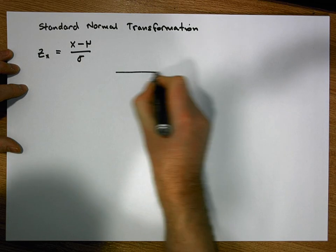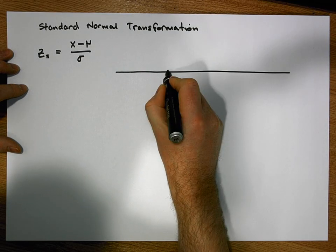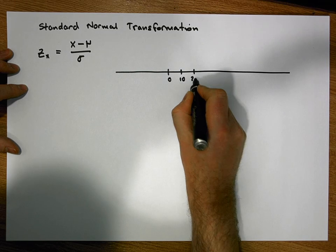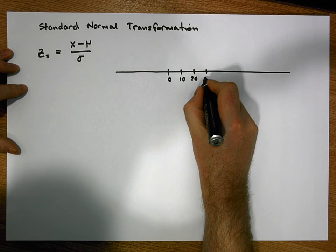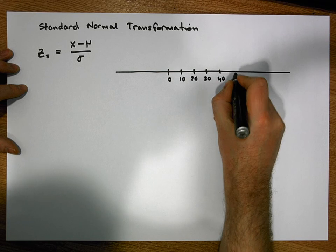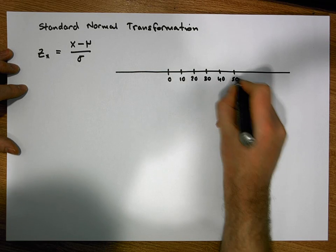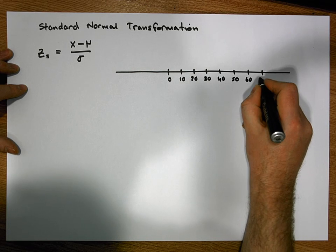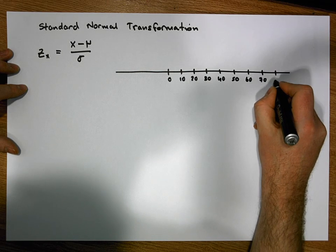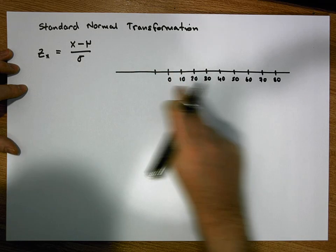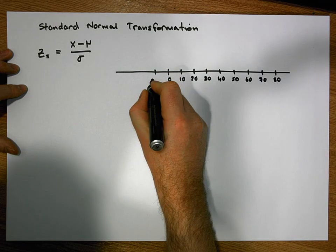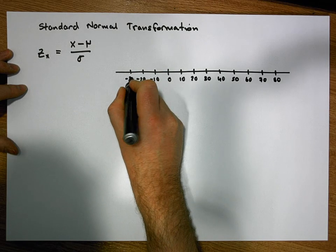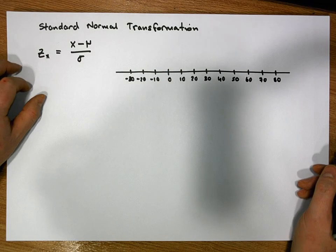Let's say we've conducted an experiment trying to understand how much students typically spend over the weekend. We know from previous studies that the amount of money students spend over the weekend is normally distributed. This axis here represents money spent, and I'll put some negative values in here as well — minus 20, minus 30.